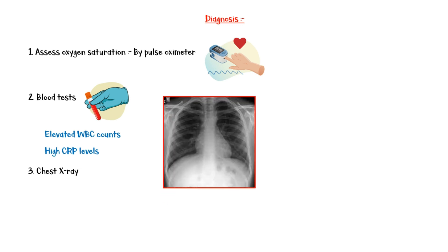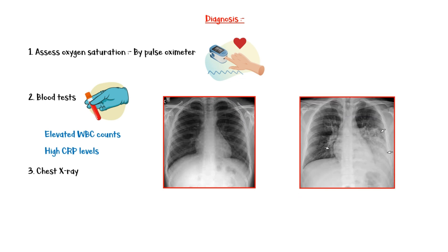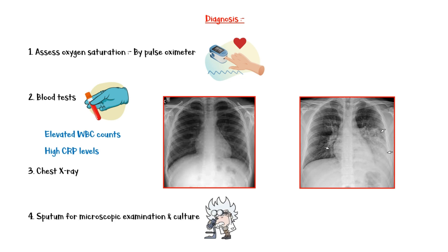Chest X-ray is mandatory in suspected pneumonia cases. Here we have a normal chest X-ray. This is a chest X-ray of a pneumonia patient — small white arrows indicate consolidation in the lungs due to inflammatory infiltrate. In addition, sputum is taken for microscopic examination and culture to identify the causative organism.